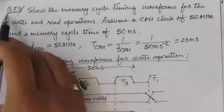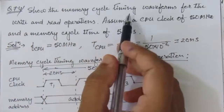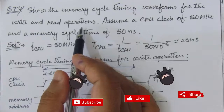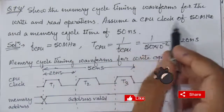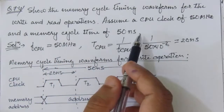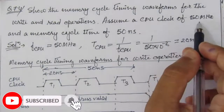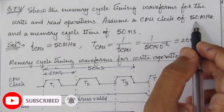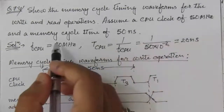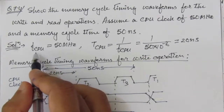In this problem I am going to solve problem number 7.4. The problem is to draw memory cycle timing waveforms for write and read operations separately — we have to make two timing waveforms. Assume a CPU clock of 50 megahertz and a memory cycle time of 50 nanoseconds. We have to find out the time duration for each clock pulse and consider 50 nanoseconds of memory cycle time.